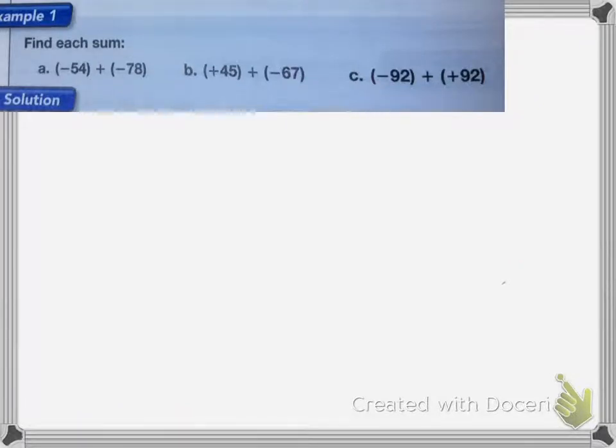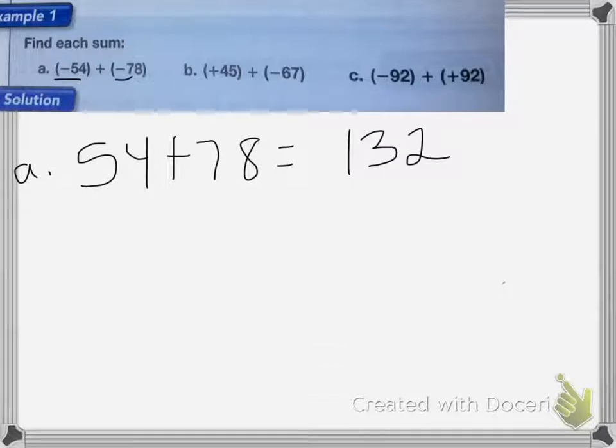On the first one, negative 54 plus negative 78, since both numbers are negative, I can add those numbers together, 54 plus 78. My answer is going to be negative because both of these numbers are negative. So 54 plus 78 equals 132, and then for my answer, I'll put that negative sign in front of it because my answer has to be negative.